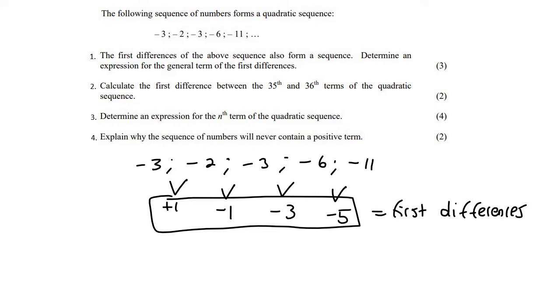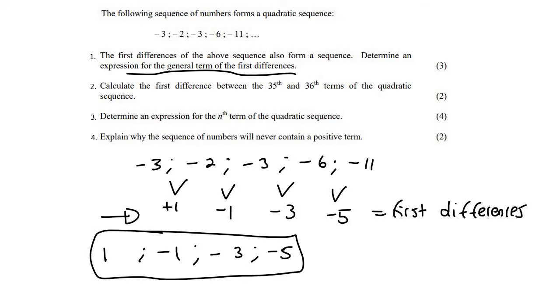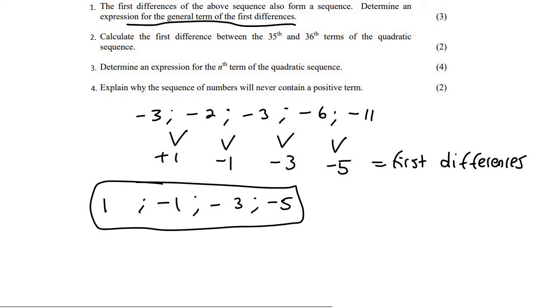It says determine an expression for the first differences. So what that means is try to work out the formula for that. So let's quickly write this for ourselves. It's like a brand new pattern. And we want to work out the formula for this. Now, what we should identify is that they are minusing two each time. Can you see that? Minus two, minus two, minus two. So that is a linear pattern.